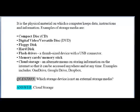The flash drive — also called a thumb drive — is a thumb-sized device with a USB connector. If you are asked about it, the answer is not a USB. The USB connector is a cord; the flash drive is the device. You can say a USB flash drive, but you cannot just say USB because that is the connector. Then you have memory cards or memory sticks. Then you have cloud storage — an alternate means of storing information on the internet so that it can be accessed anywhere and at any time. Examples include OneDrive, Google Drive, and Dropbox.